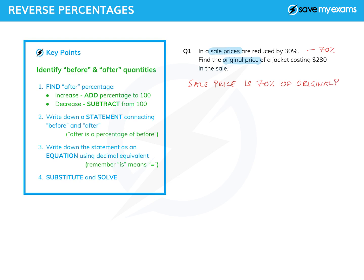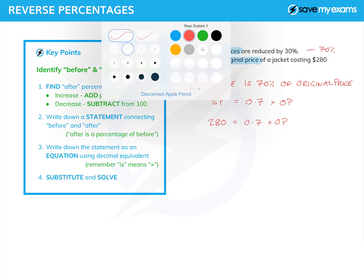We can now turn that into an equation. Sale price — let's call it SP — equals 70%; percent means divided by 100, so that's 0.7, which is the decimal equivalent of 70%. 'Of' is always times, so SP = 0.7 × original price (OP). We know the sale price of a jacket is $280, so 280 = 0.7 × original price, and we have an equation to solve.